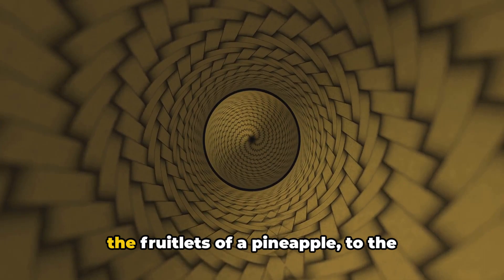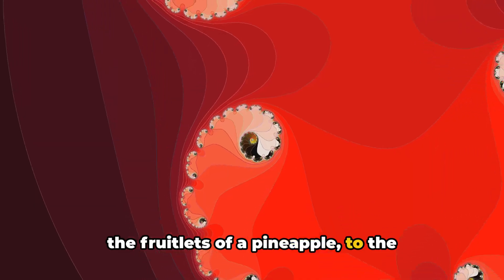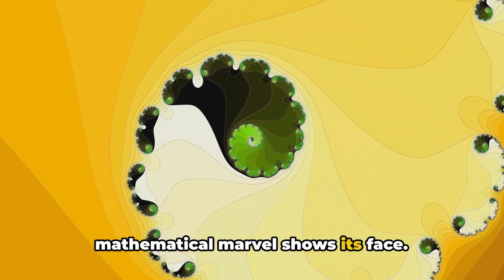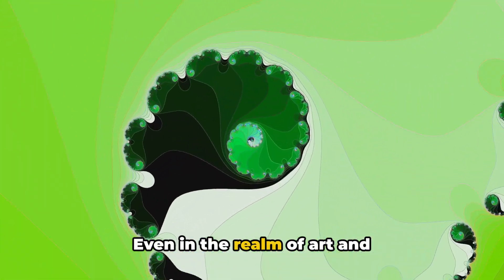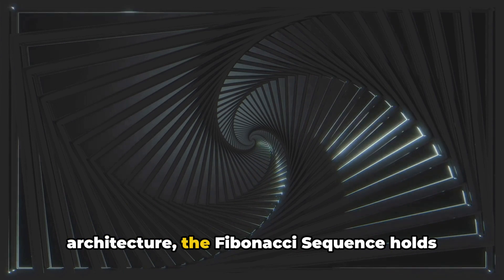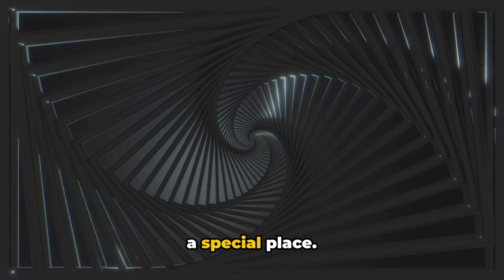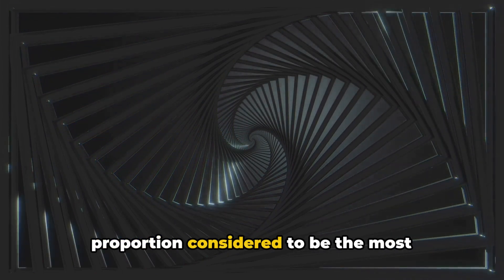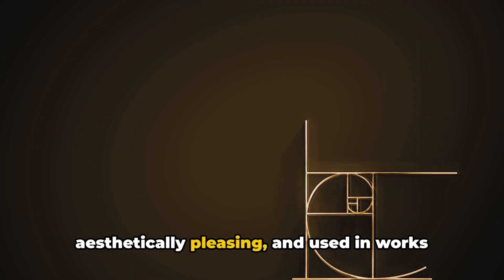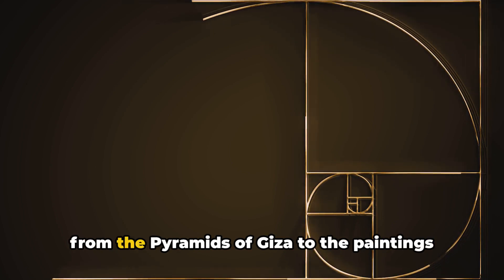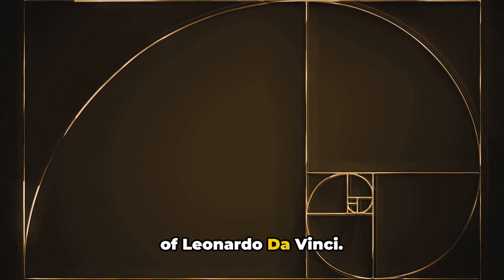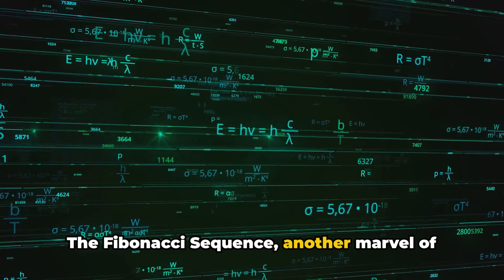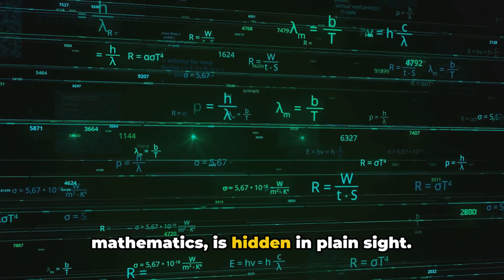From the arrangement of leaves on a stem, the fruitlets of a pineapple, to the spiraling galaxies far out in space, this mathematical marvel shows its face. Even in the realm of art and architecture, the Fibonacci Sequence holds a special place. It forms the basis of the Golden Ratio, a proportion considered to be the most aesthetically pleasing, and used in works from the Pyramids of Giza to the paintings of Leonardo da Vinci. The Fibonacci Sequence, another marvel of mathematics, is hidden in plain sight.